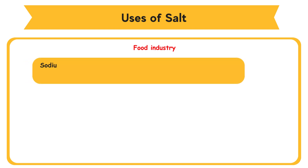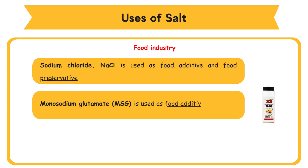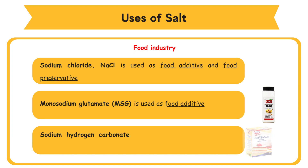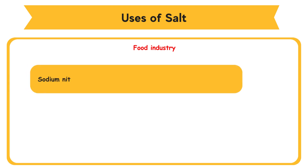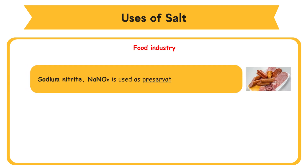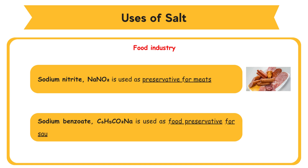Food industry: Sodium chloride, NaCl, is used as food additive and food preservative. Monosodium glutamate, MSG, is used as food additive. Sodium hydrogen carbonate, NaHCO3, is used as self-raising flour. Sodium nitrite, NaNO2, is used as preservative for meats. Sodium benzoate, C6H5CO2Na, is used as food preservative for sauces.